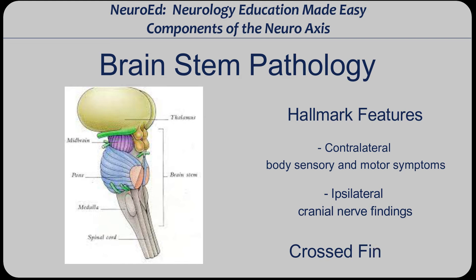Important phrase: crossed findings. The terms ipsi- and contralateral are referring to the lesion. So if you have a left brainstem lesion, you will have left cranial nerve dysfunction and right-sided body symptoms. Not only are you now quickly localizing it to the brainstem because of the crossed findings, but you're also lateralizing to right or left. For example, if you have right facial droop and left-sided weakness, that's crossed findings — it's brainstem. And because you have right facial droop, you know it's right brainstem, not just brainstem.